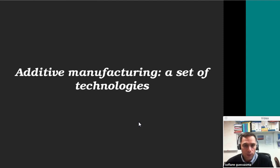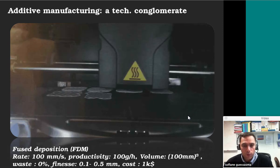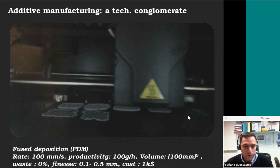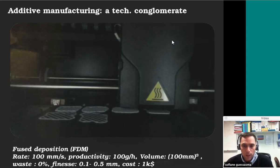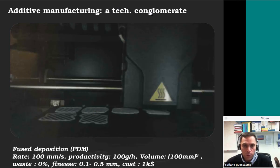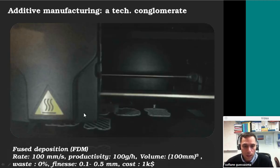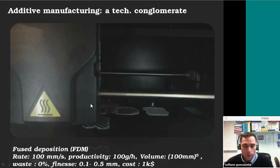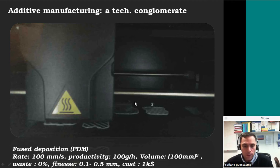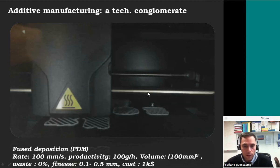Now I'm going to speak more about the set of technologies of additive manufacturing. One of the popular technologies is what we call fused deposition modeling. This technology works like a standard printer — you have the printer head and there's a filament of a polymeric material that goes inside this head, is heated, diffused and deposited on the base. The base moves in the z-direction, the building direction, and the printing head moves in x and y. This technology is really cheap but has drawbacks like low productivity and a small printable volume, typically of the order of 100 milliliters.